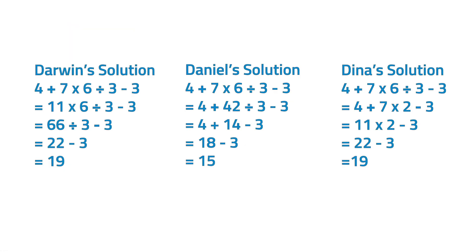That was great, kids. Now that you know the MDAS rule, let's go back to the solutions of the three pupils earlier. Whose solution do you think is the correct one? We can see that Daniel's solution is the correct one because he followed the MDAS rule. He multiplied 7 and 6 first, getting 42. Then divided 42 by 3, getting 14. Next, he added 4 to 14, getting 18. Lastly, he subtracted 3 from 18 and got the final answer, 15.